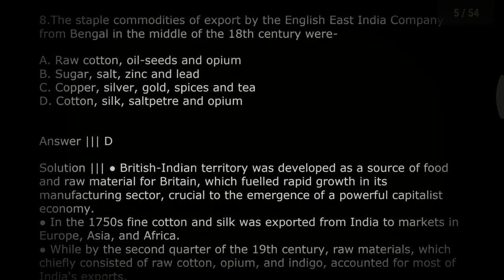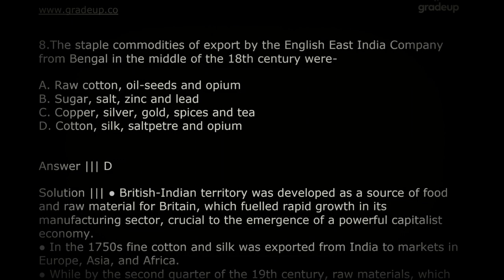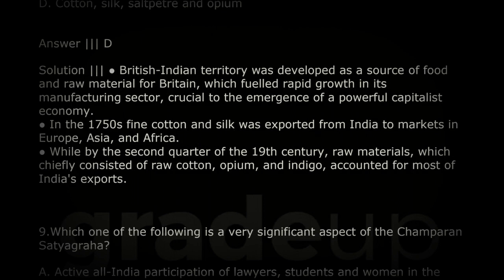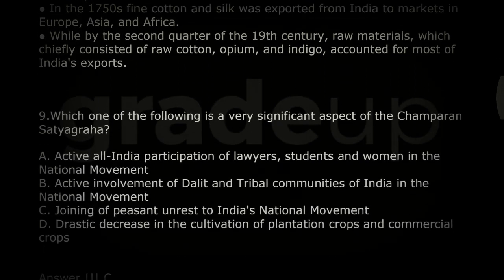The staple commodities of export by the English East India Company from Bengal in the middle of the 18th century: the correct option is D — cotton, silk, saltpetre, and opium. British India territory was developed as a source of food and raw material for Britain. In the 1750s, fine cotton and silk were exported to markets in Europe, Asia, and Africa. By the second quarter of the 19th century, raw cotton, opium, and indigo accounted for most Indian exports.